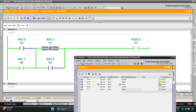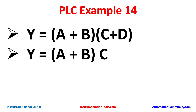Let's move to another example: Y = (A + B) · C. There is an OR logic gate between A and B, so A and B as normally open contacts will be connected in parallel with each other, and then C will be connected in series with (A + B).